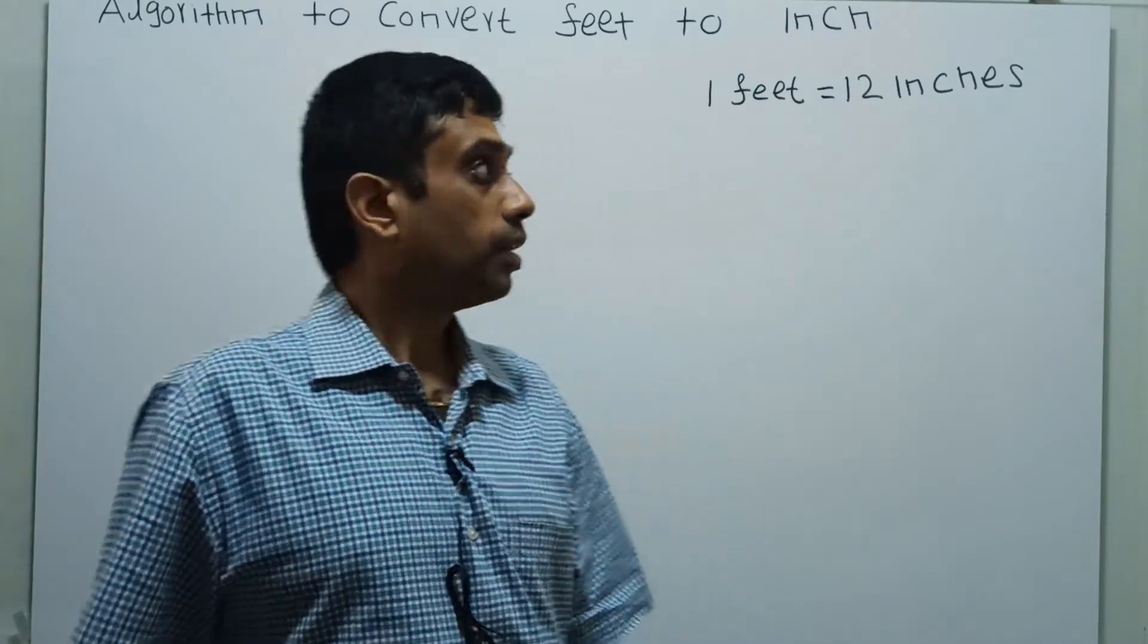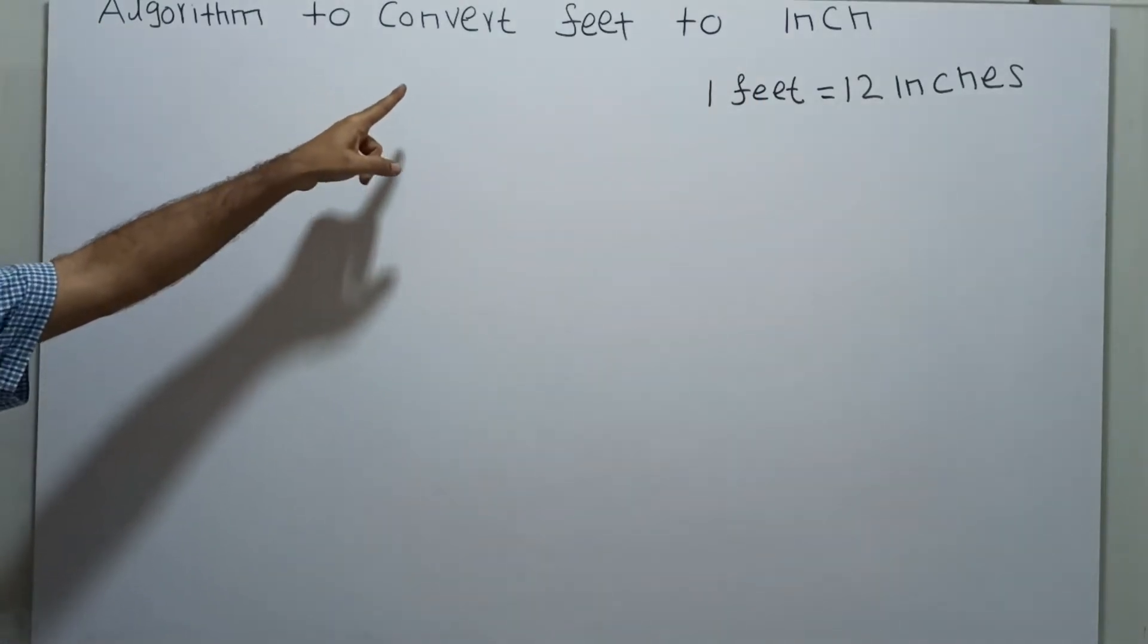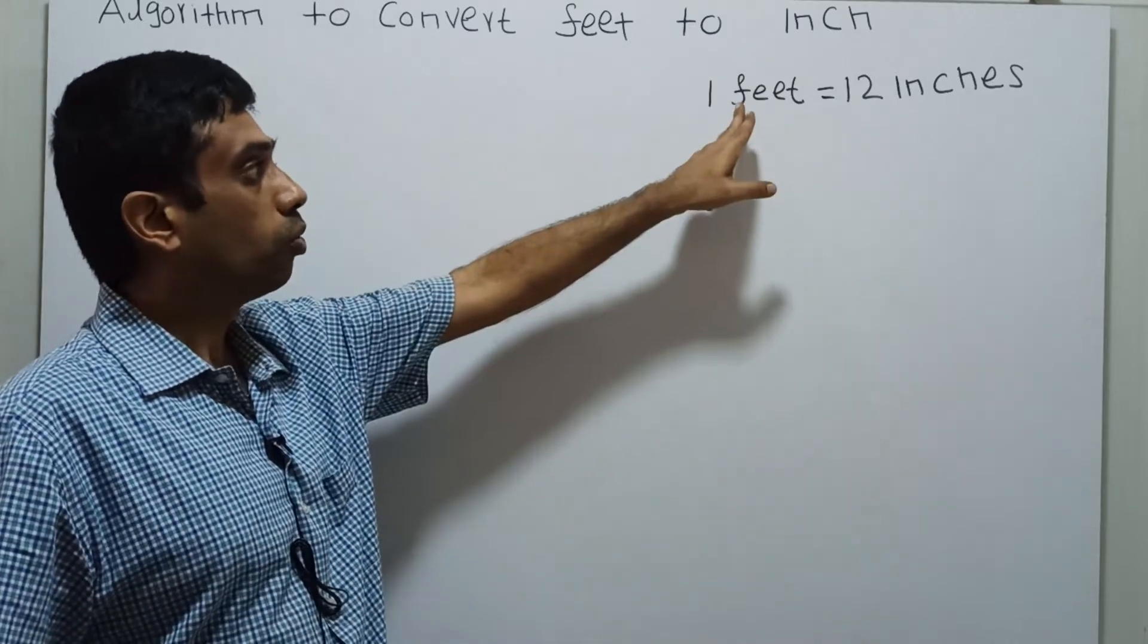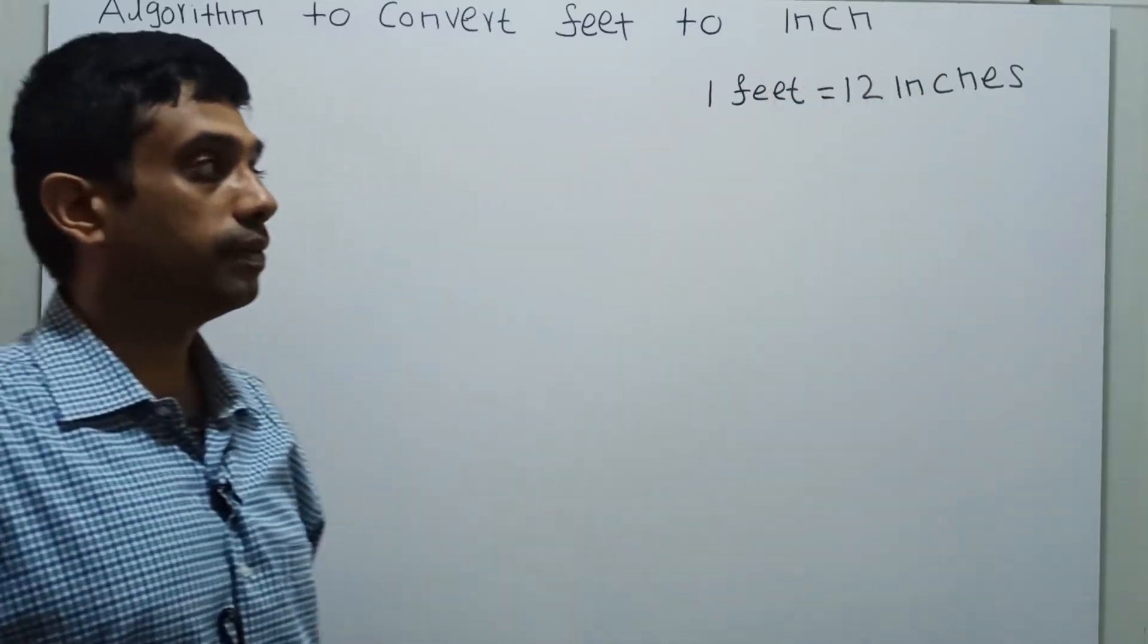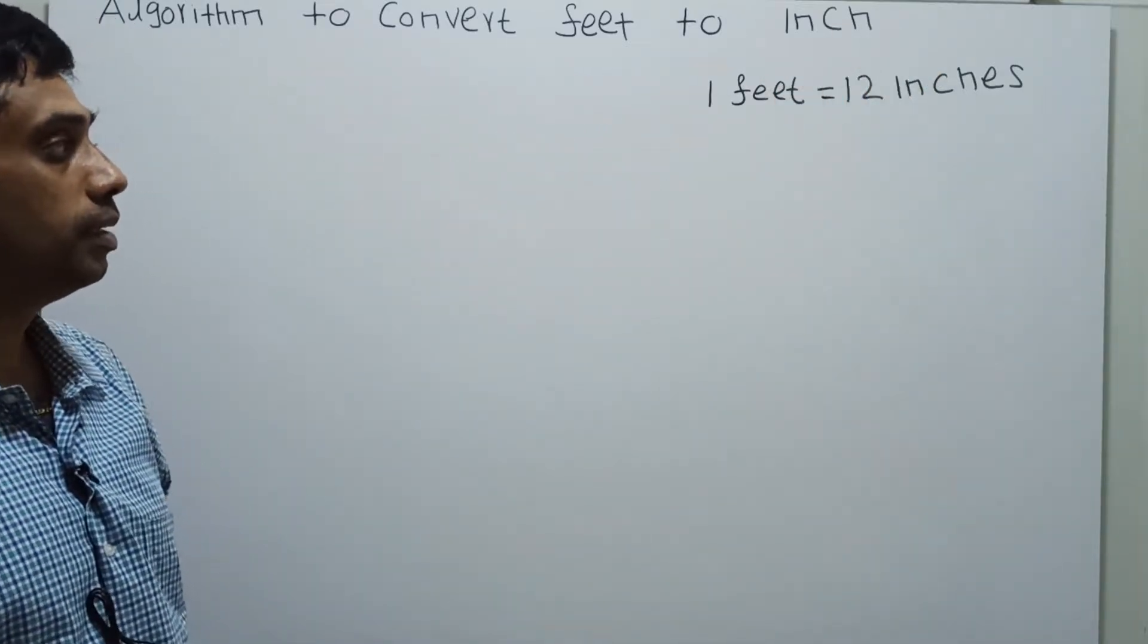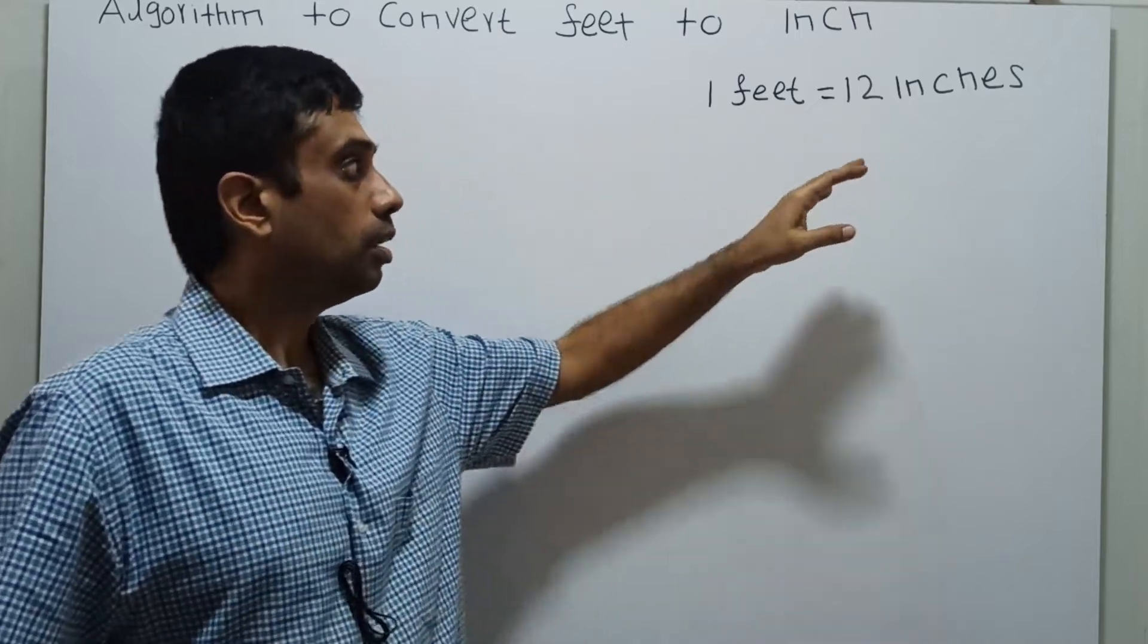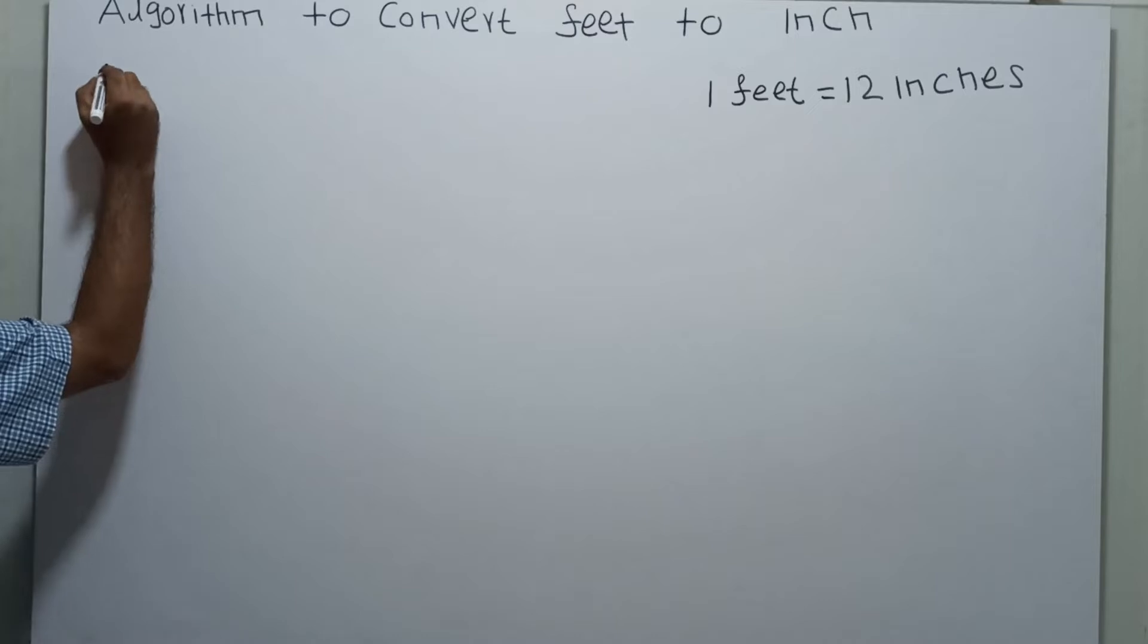Hi friends, today we are going to write an algorithm to convert feet to inches. One feet equals 12 inches. For this conversion, we are going to write an algorithm where we obtain feet as an input and convert it to inches.